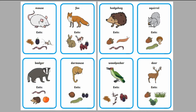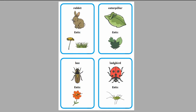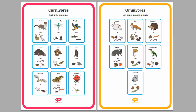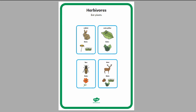To use them, just print them off, cut them out, and ask children to place them in either the herbivore, carnivore, or omnivore sheet. Then you can go through the answers at the end and see if they've sorted them correctly. If they haven't, you can just re-evaluate where they should go.